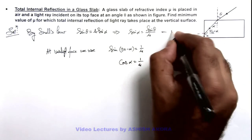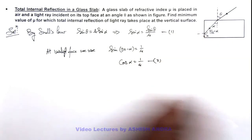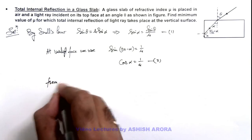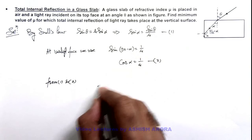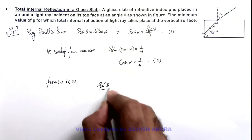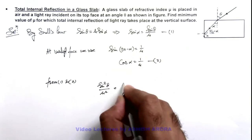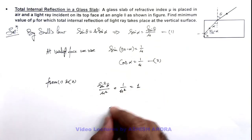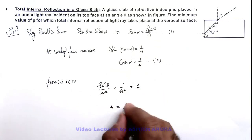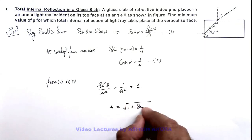If this is our equation 1 and this is equation 2, here we can write from 1 and 2, squaring and adding the two, this will result sine square theta by mu square plus 1 by mu square is equal to 1. So this will result the value of mu to be root of 1 plus sine square theta.